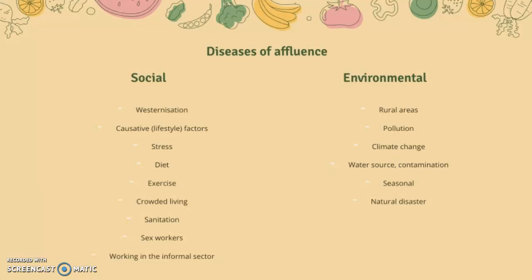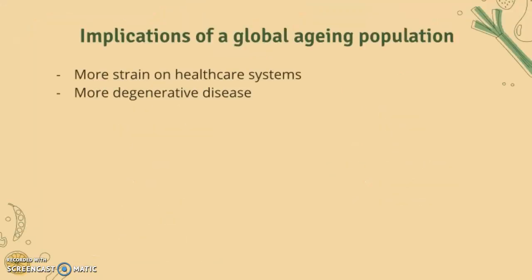The implications of a global aging population include more strain on healthcare systems, as an aging population is more likely to have degenerative diseases. Governments must invest more into healthcare rather than education and infrastructure. This increased prevalence of degenerative disease also places strain on research facilities and general national resources.